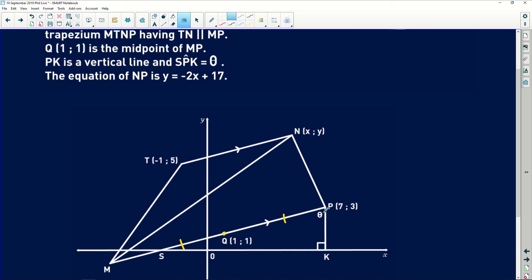And angle SPK is equal to theta. The equation of NP is Y equals negative 2X plus 17. So this line here, which means that the gradient of this line is negative 2. Very important.